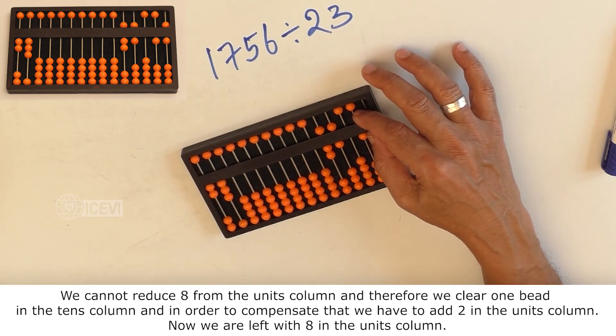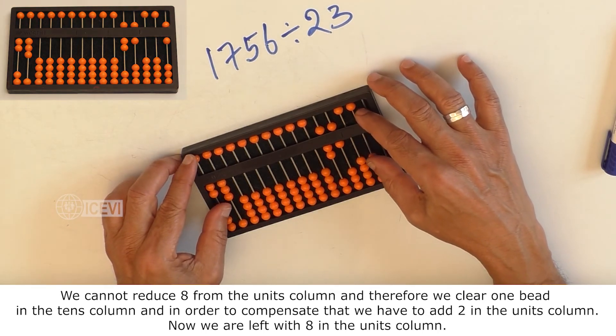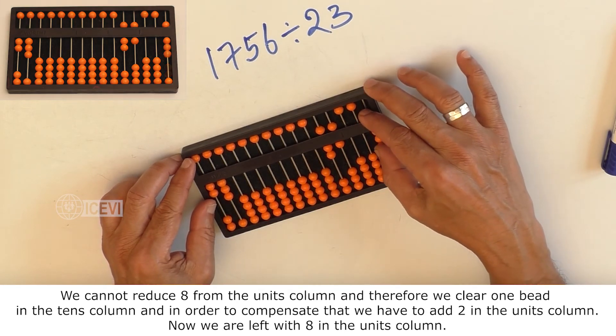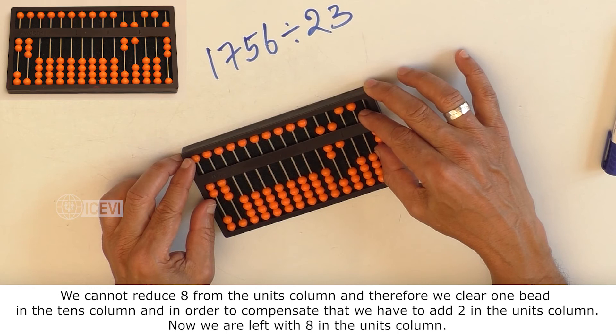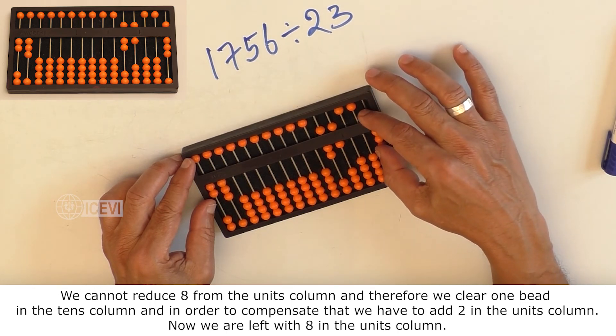We cannot reduce 8 from the units column and therefore we clear 1 bead in the tens column and in order to compensate that, we have to add 2 in the units column.